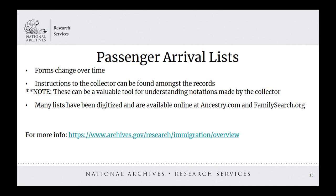Passenger arrival lists are a good place to start our conversation about immigrant records. The forms have changed over time, and these changes often mean there may be unfamiliar notations on the records. I always suggest that researchers look for the instructions to the collector that are often found among the forms for a given arrival — these can be a valuable tool for understanding notes the collector may have added. Many of the arrival records have been digitized and are available online through the National Archives Catalog, Ancestry.com, or FamilySearch.org. You can visit NARA's immigration overview web page to learn more.